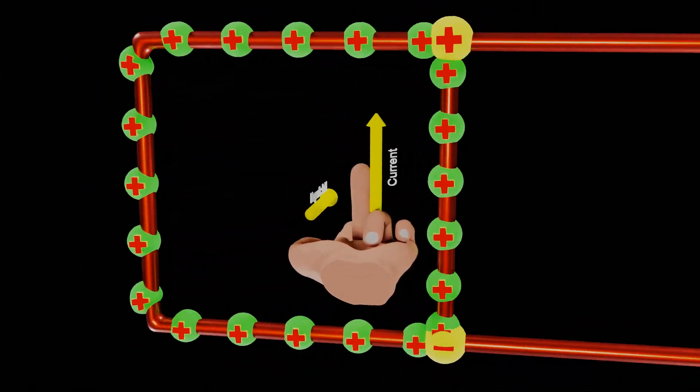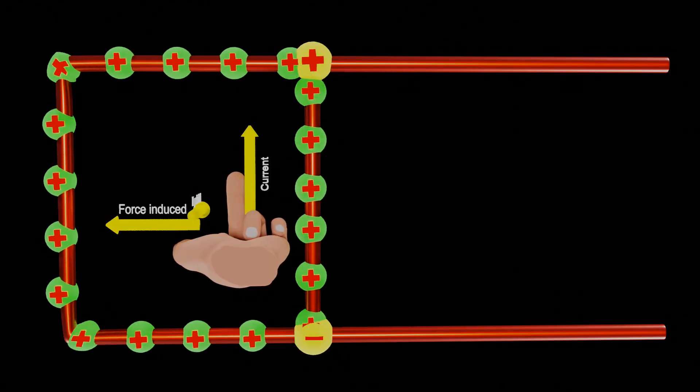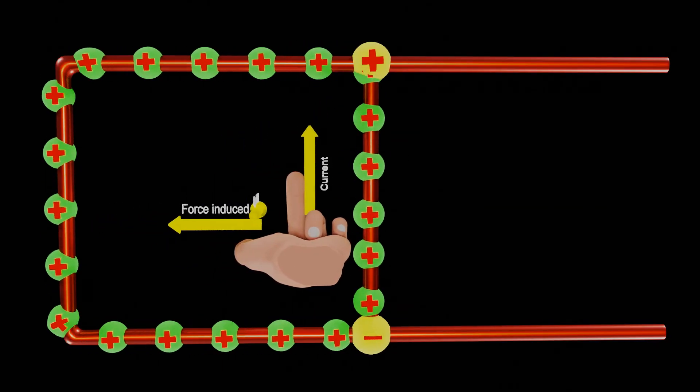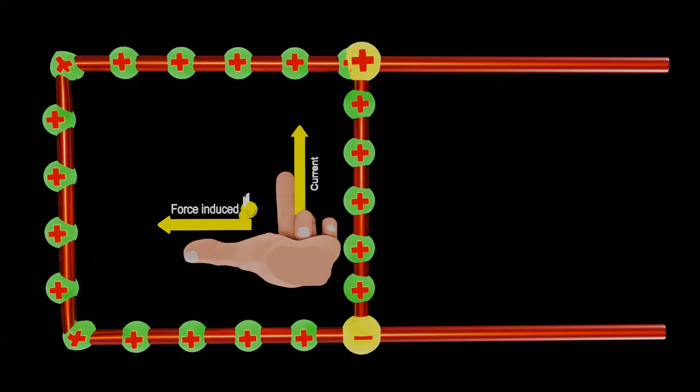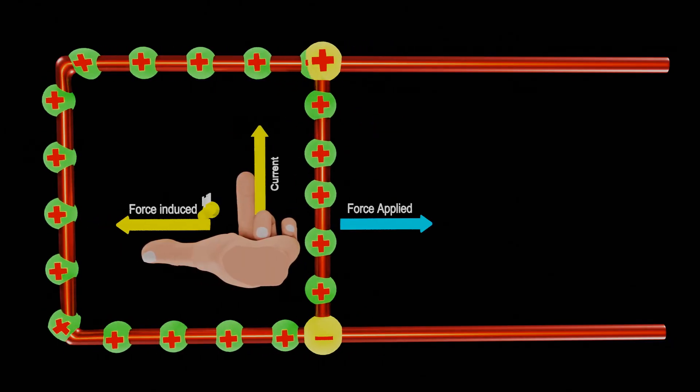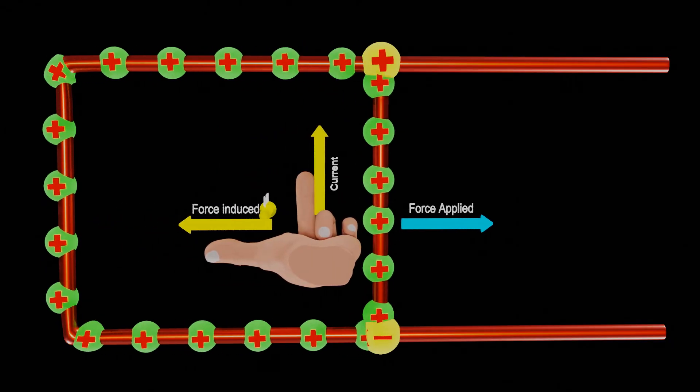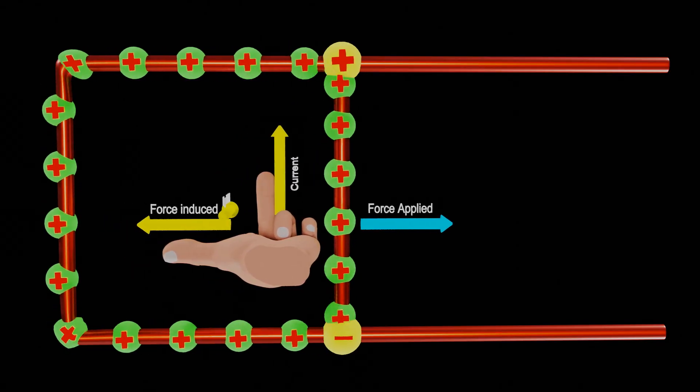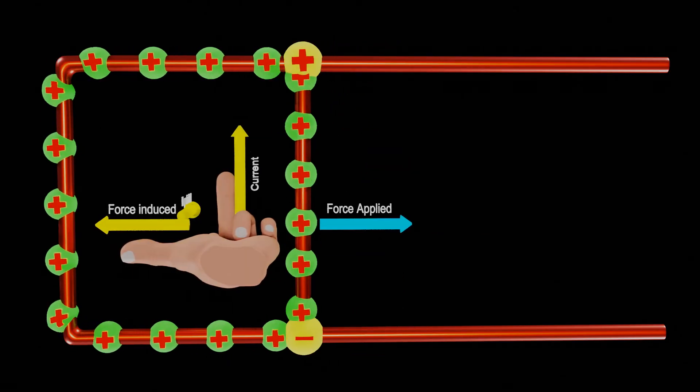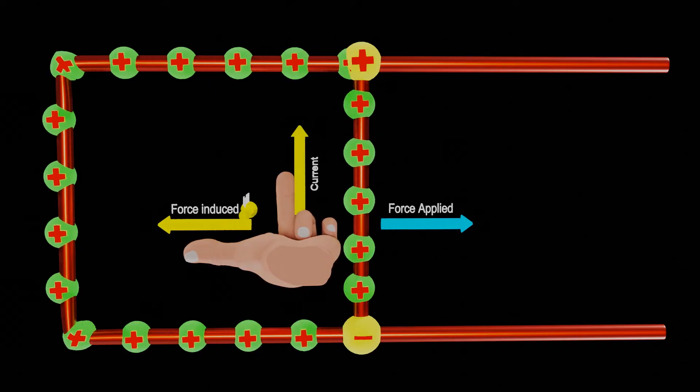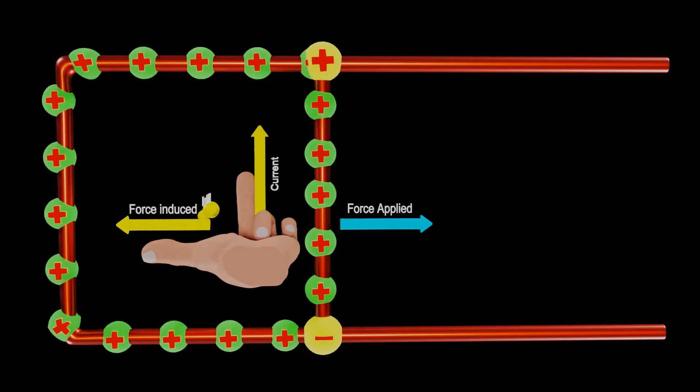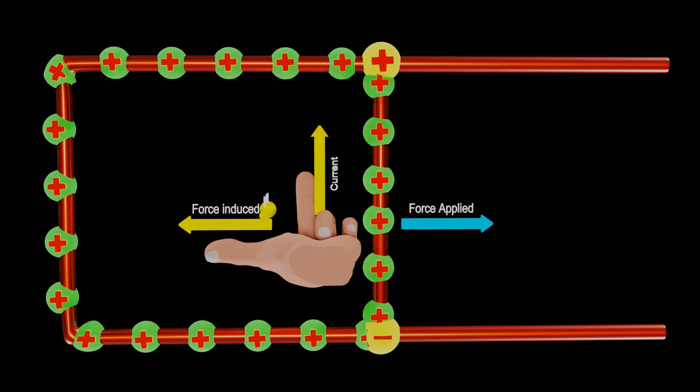Now notice that the direction of force induced in the sliding arm represented by the thumb we got is opposite to the direction of force applied. Thus it simply proves Lenz's law, which states that EMF will induce in such a way so that it could oppose the cause which is inducing it.